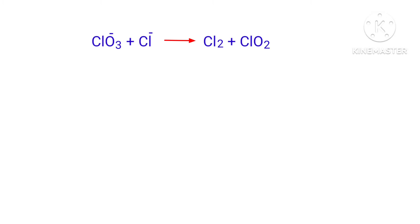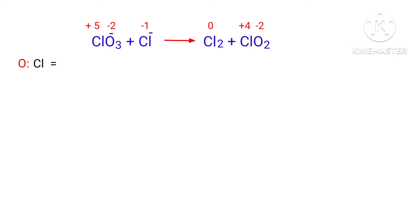Figure out the reducing and oxidizing agents by the rules of assigning oxidation numbers. In this equation, Cl has a charge of minus 1 and it is changing to 0, so Cl is being oxidized. The Cl has a charge of plus 5 and it is changing to plus 4, so Cl is being reduced.